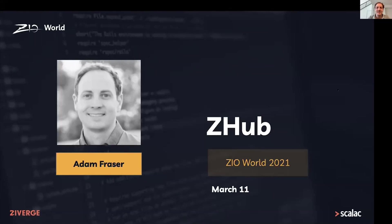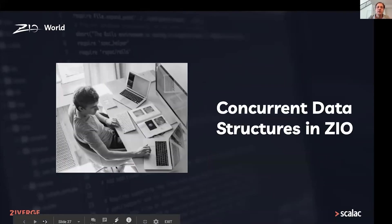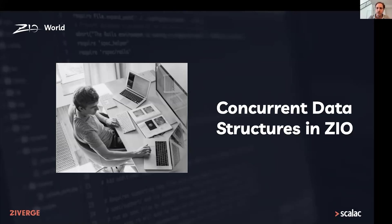The last thing I'd like to talk about today is ZHub, a new concurrent data structure coming to ZIO. But before diving into ZHub, I want to talk about concurrent data structures in ZIO in general. ZIO is a library and framework for solving your hardest concurrency problems — it's not just a functional effects system. ZIO ships batteries included with all the concurrent data structures you need, including basic things like Ref and Promise, but also more complex things like a concurrent queue.